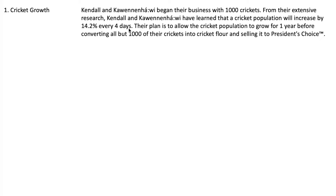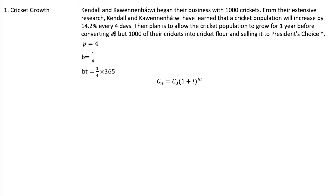So we have a period of four days, and we're going to use our growth formula: C(n) = C₀ × (1 + i)^(bt), because we have a period that's not equal to one. Our period is four, so b is one over four, or 0.25, and we're doing this for one year which is 365 days. One quarter times 365 is 91.25.